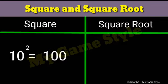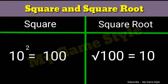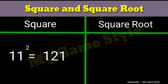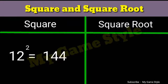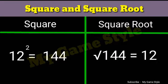10 square is equals to 100. Square root 100 is equals to 10. 11 square is equals to 121. Square root 121 is equals to 11. 12 square is equals to 144. Square root 144 is equals to 12.